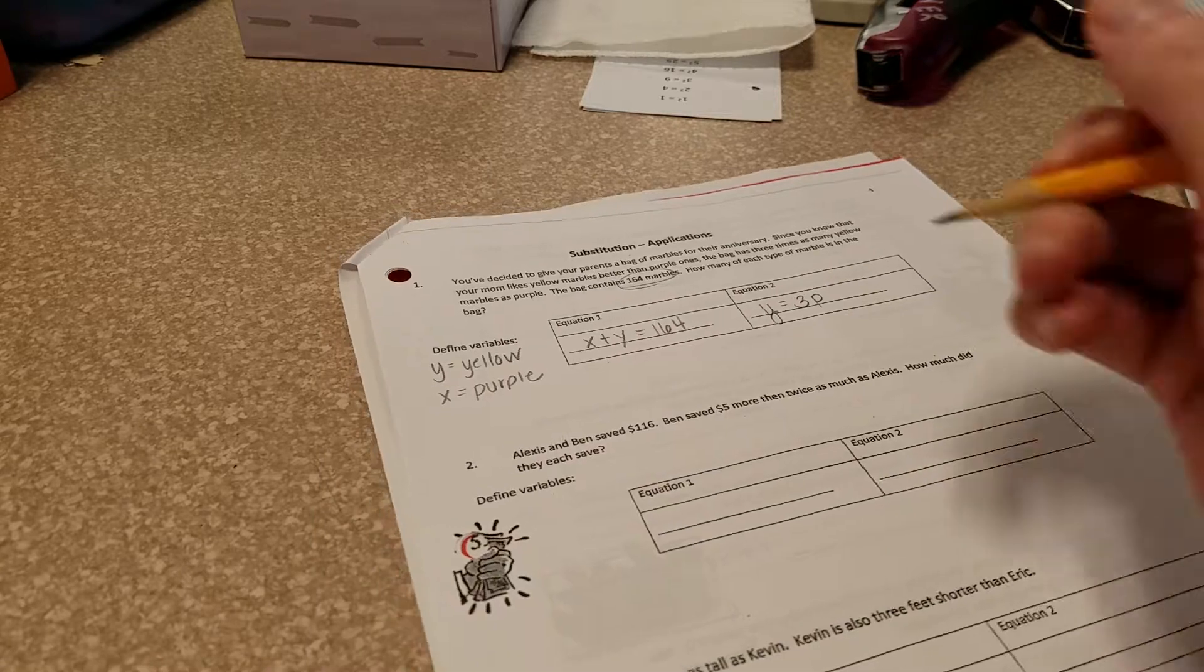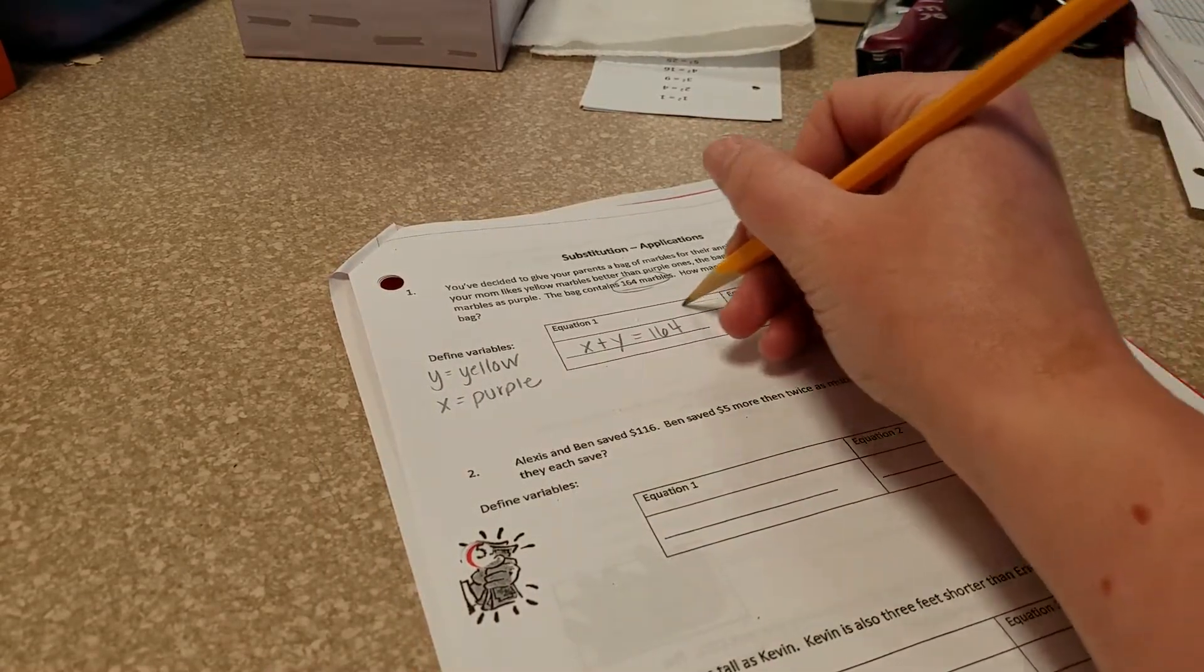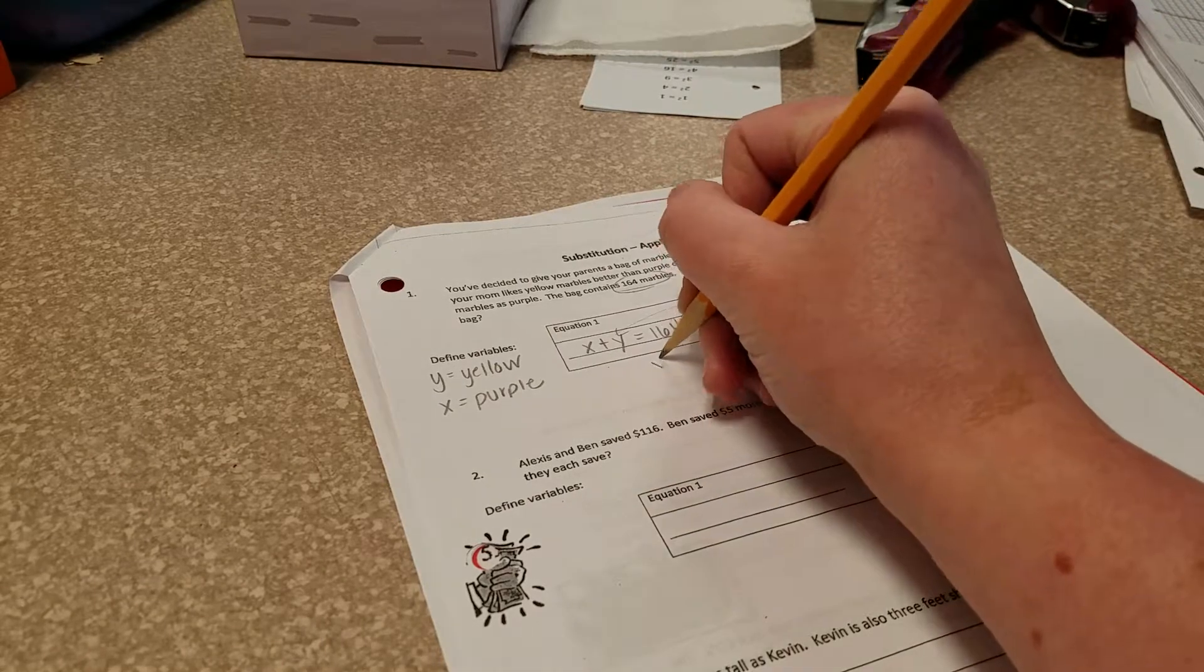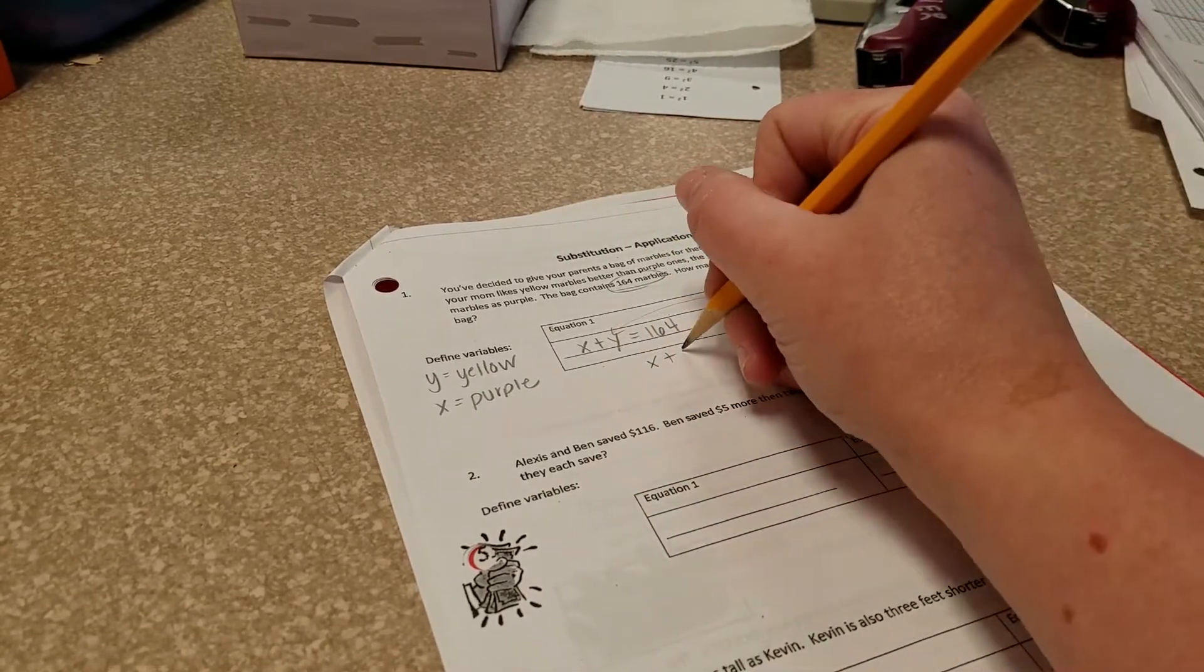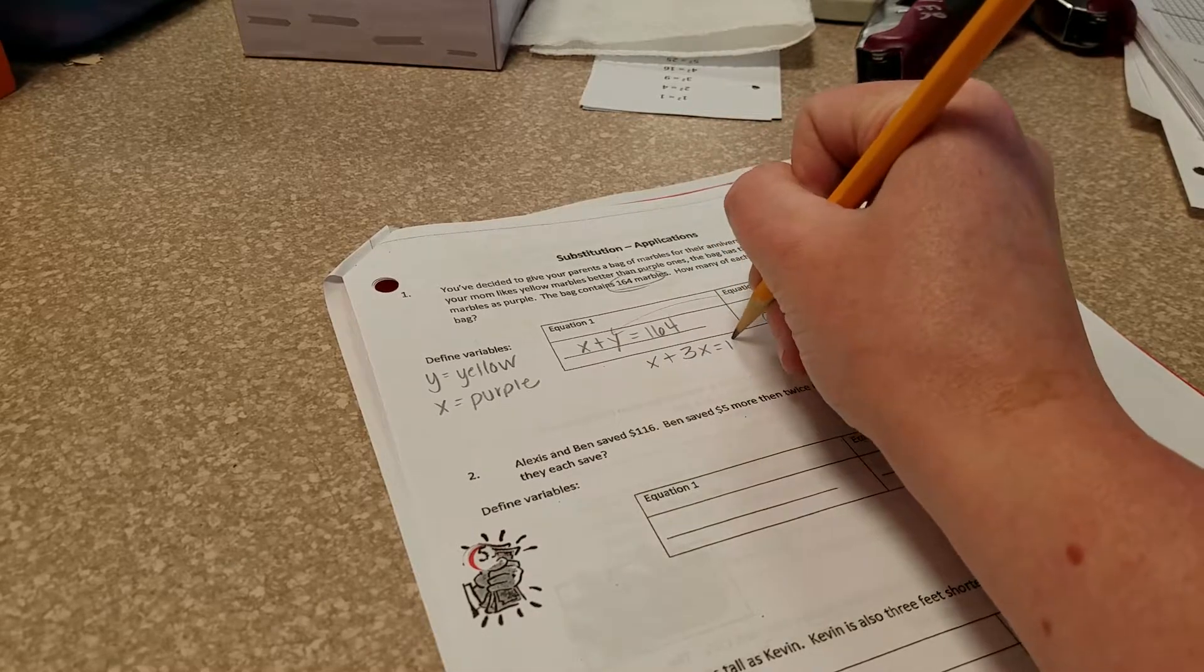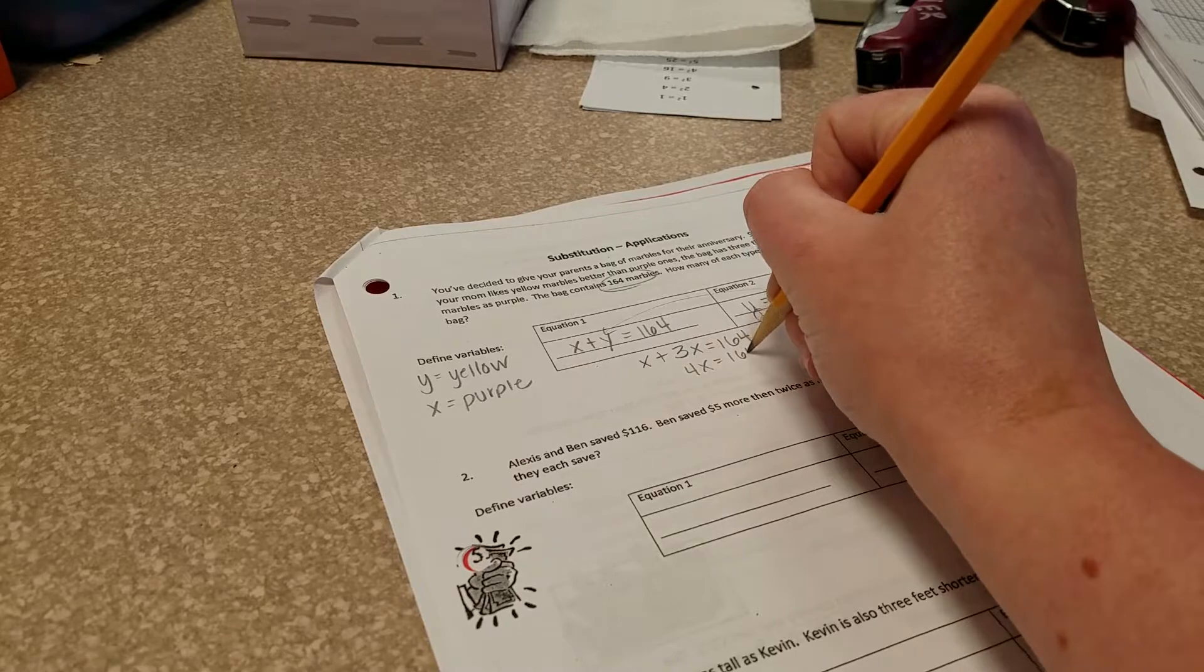Right now we have our two equations. So we can substitute. Y equals 3P. I'm going to plug this in for Y over here in equation one. So X plus, and this should be 3X, not 3P, sorry. 3X equals 164. So 4X equals 164.